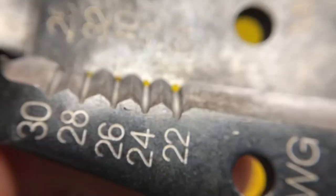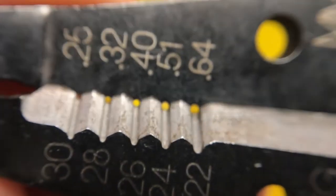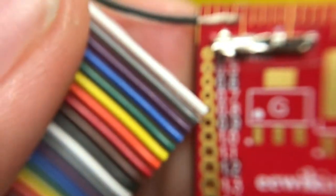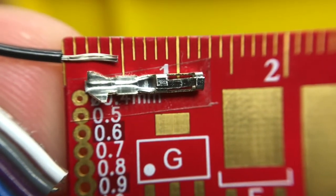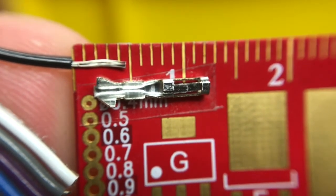Okay, so you want to strip about, let's see with our ruler, I stripped about 5 millimeters, 4 to 5, and that's going to be maybe more than enough.